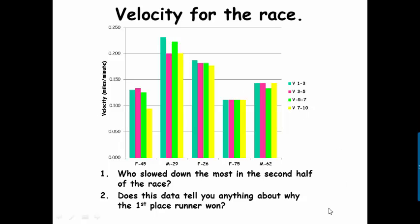Alright, a different way to look at the velocity for this race. I calculated the velocity for between miles 1 and 3, 3 and 5, 5 and 7, and 7 and 10. And so this is for 45-year-old female, 29-year-old male, 26-year-old female, 75-year-old female, and the male who is 62.